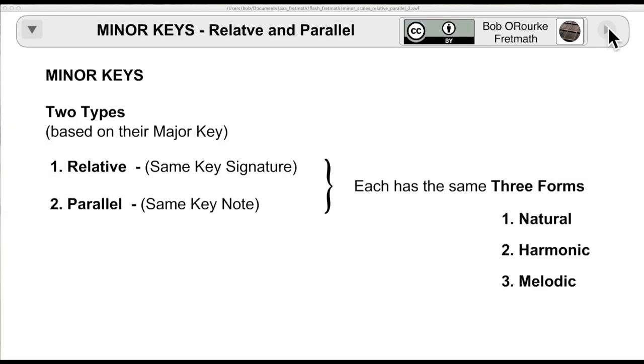The way I learned the minors, there were two types: the relative, which has the same key signature as the major, and the parallel, which has the same keynote as the major. Each type has the same three forms: natural, harmonic, and melodic.